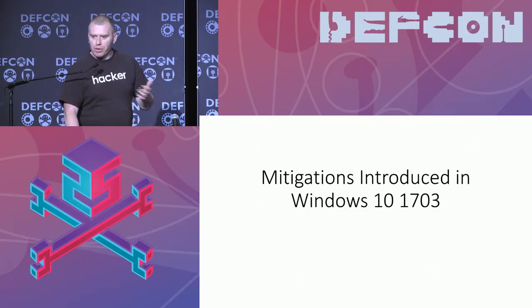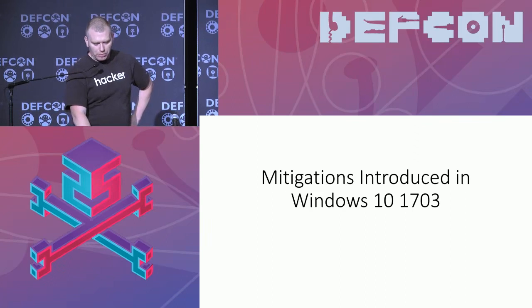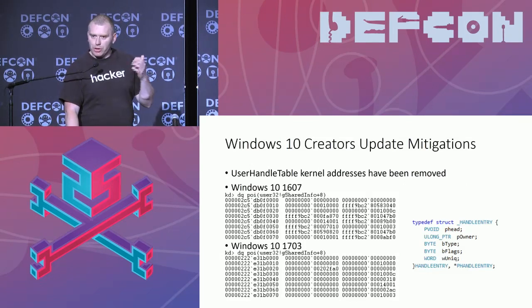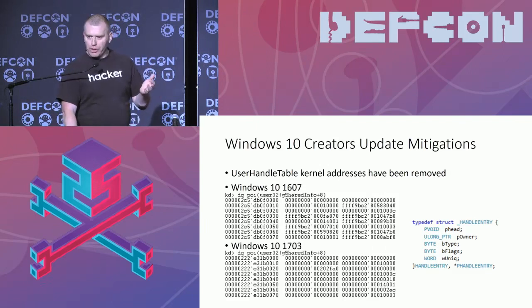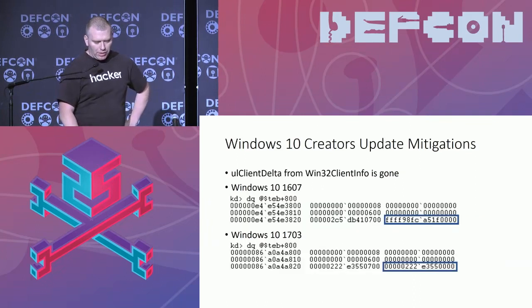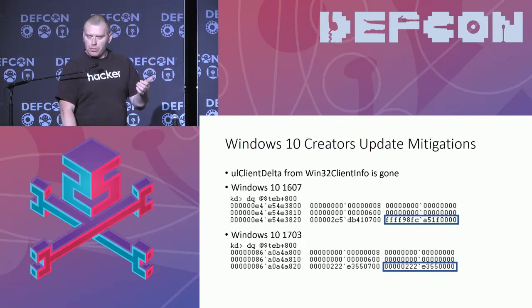That was what was put in the Anniversary Update — but this talk was about the Creators Update, so let's see what was done there, because they did additional mitigations. What we find, especially for the window object, is that the user handle table which we used to disclose addresses of window objects has been changed. So before we saw a lot of kernel addresses there for all the objects — they have been removed now. Additionally, the field called ClientDelta, which is the offset from the user mode mapped desktop heap to the actual desktop heap, has been removed as well. So there's not really any way to find the window objects anymore.